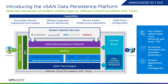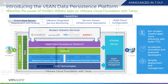The VMware vSAN Data Persistence Platform, or DPP, provides a framework for modern stateful service providers to build deep integration with the underlying virtual infrastructure, leveraging the Kubernetes operator method and the vSphere pod service. This allows you to run stateful applications with lower TCO and simplified operations and management.